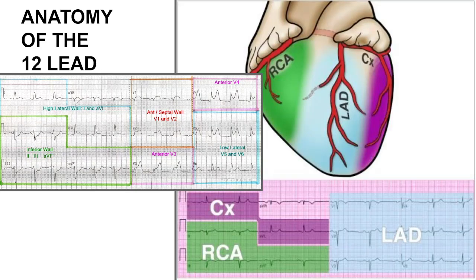The first thing we have to start with is the geography. If you don't already know which leads correspond to what anatomy of the heart, you really want to get that crammed in. And then once you've done that, you want to begin to understand exactly which coronary artery perfuses that geography, that section of the heart, that anatomy. This is really going to help you understand the pathophysiology of that acute onset MI.